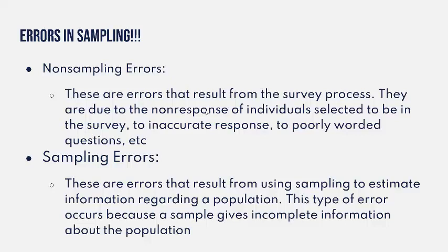Sampling errors are errors that result from using sampling to estimate information about a population. This type of error occurs because a sample gives incomplete or inaccurate information about the population, and there's not much you can do to control these. For example, suppose you want to estimate the average income in the United States and you call 100 people. The first 99 have normal jobs — doctors, lawyers, teachers, nurses, bus drivers, bartenders. But then the hundredth person you call ends up being Jeff Bezos, the CEO of Amazon and at the time the wealthiest person in the world. If you take the average income of those 100 people, that sample would do a poor job estimating the population mean income because it gives incomplete or inaccurate information about the population.